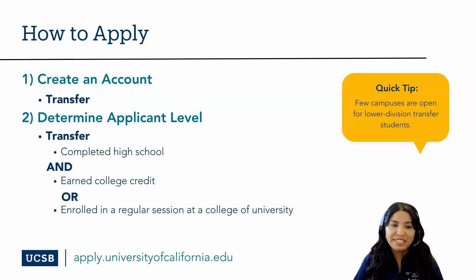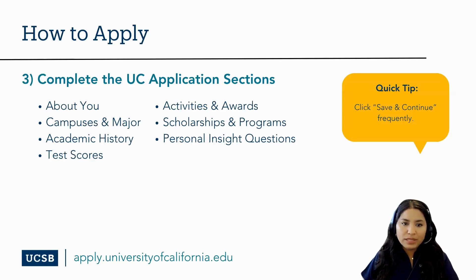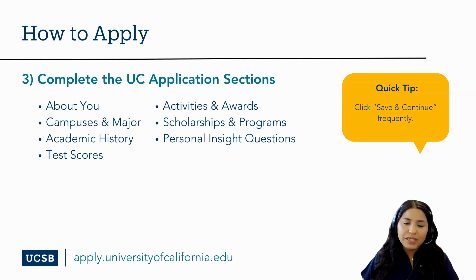When you're ready to apply, head to universityofcalifornia.edu/apply to create your UC application account, then determine your applicant level. Transfer applicants are students who have completed high school, earned college credits, and enrolled in a regular session at a college or university for either the fall, winter, or spring term. You'll then complete the UC application sections, including about you, selecting your campuses and major, and inputting your academic history. For transfer students, add any college coursework from community colleges or other universities, including your test scores, activities and awards, scholarships and programs, and the personal insight questions.